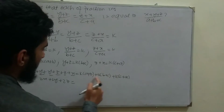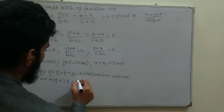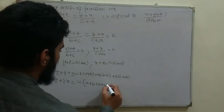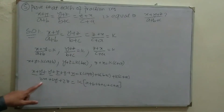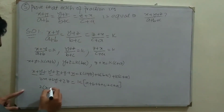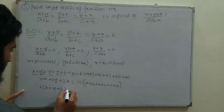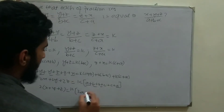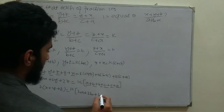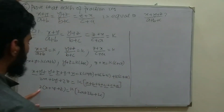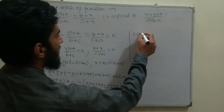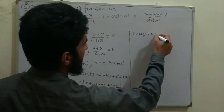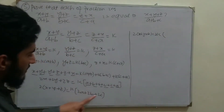Taking k common on the right side gives k(a+b+b+c+c+a). Inside, a+a=2a, b+b=2b, c+c=2c, so the right side becomes 2k(a+b+c). Therefore 2(x+y+z) = 2k(a+b+c).